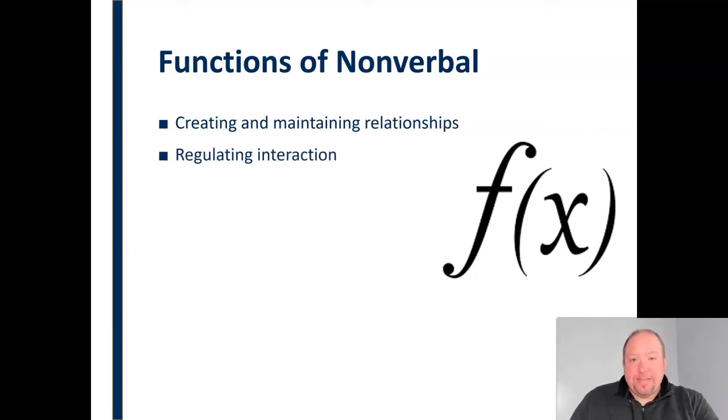We use it to regulate interaction. We use pause, for example, which is a nonverbal element. We use pause in conversation to indicate that it's the other person's turn to speak. Or we may start looking around and avoiding eye contact to indicate that we're no longer interested in talking with that person, or we may just turn and walk away. We use it to regulate interaction in a variety of ways so it performs that function for us as well.